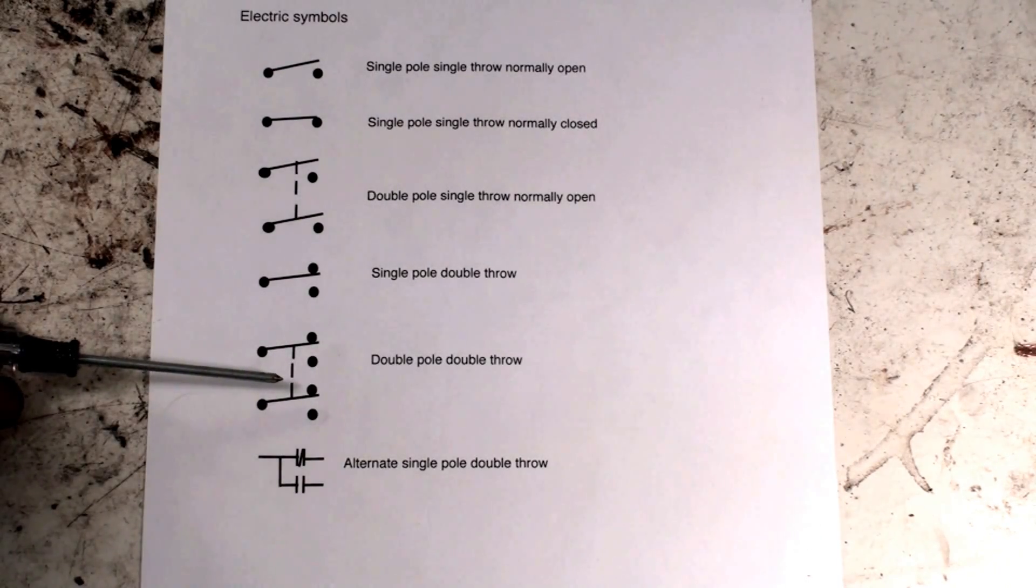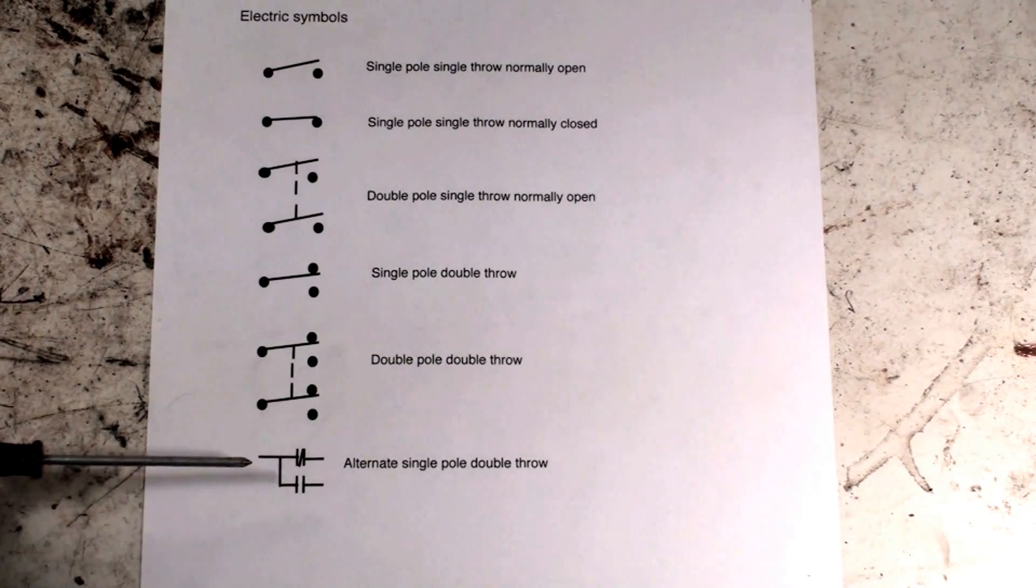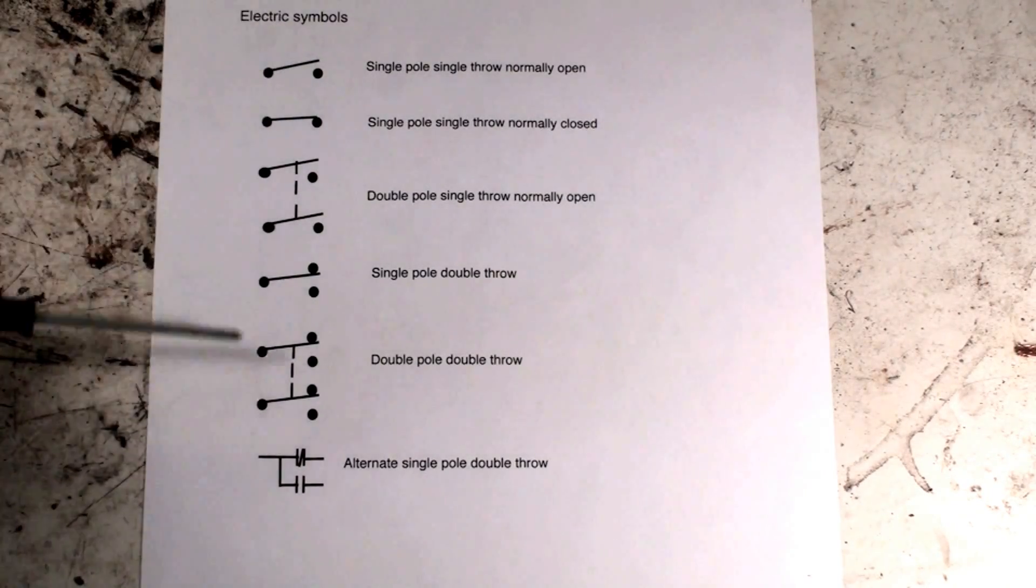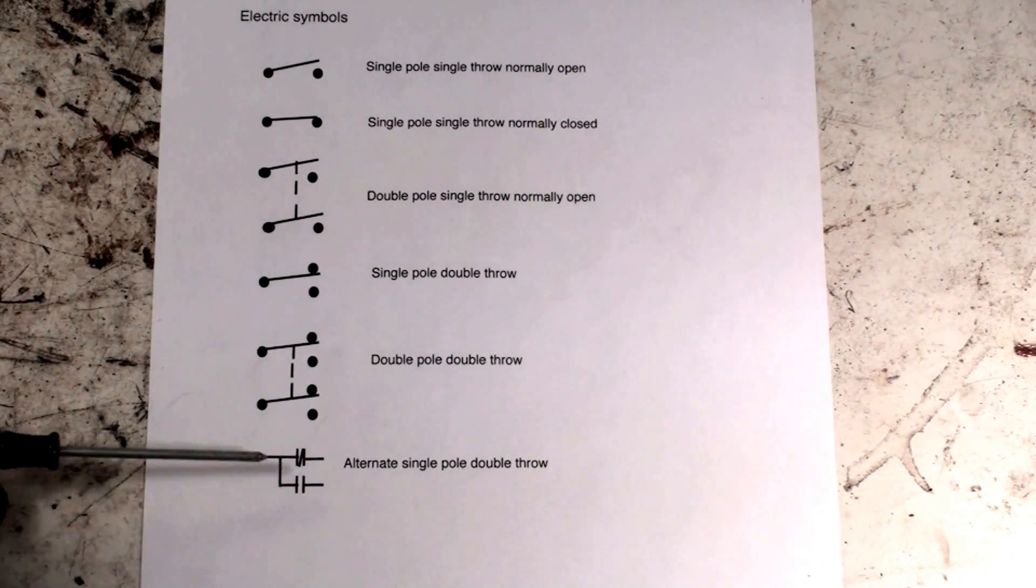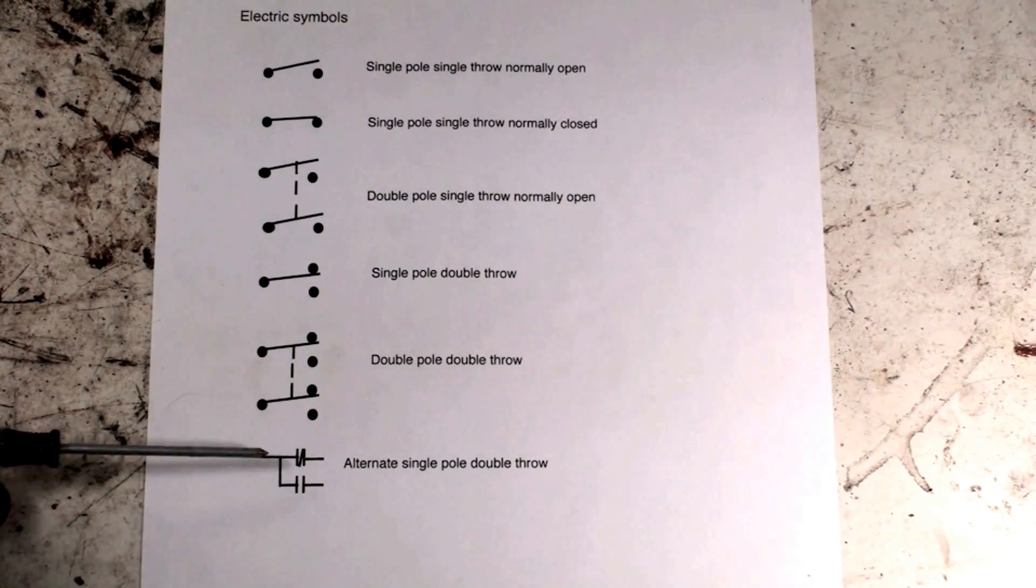Here's an alternate way of making a single pole double throw switch. Any of the configurations up here could be this way. This is normally a set of contacts rather than a manually operated switch, but it can be either way.